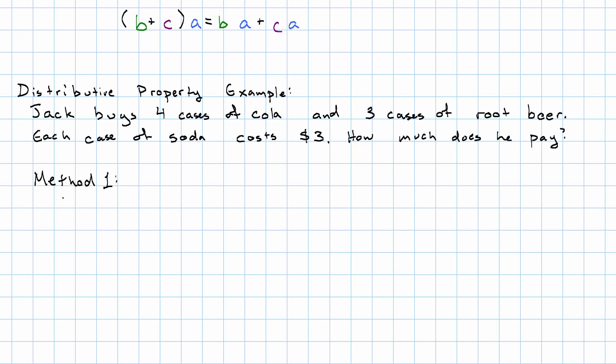The first way would be to say, well, he buys four cases plus three cases is seven cases. Seven cases times three dollars per case is twenty-one dollars. So, we've just worked out three times four plus seven. So, we've just worked out four plus three times three.